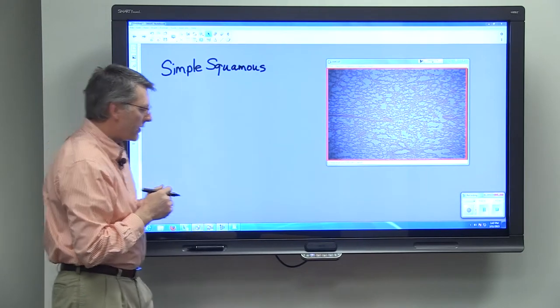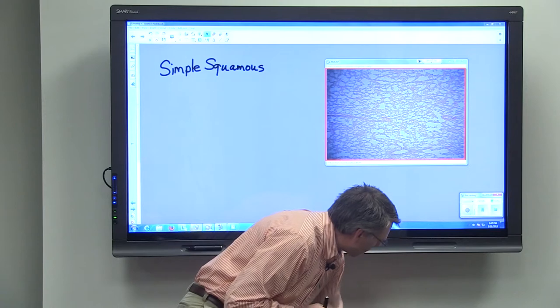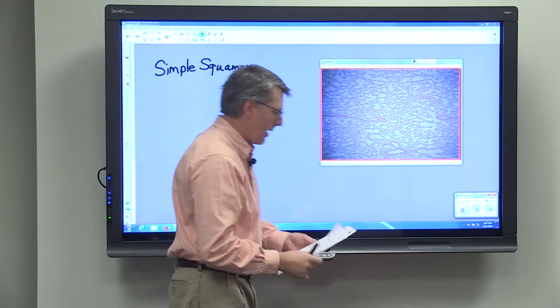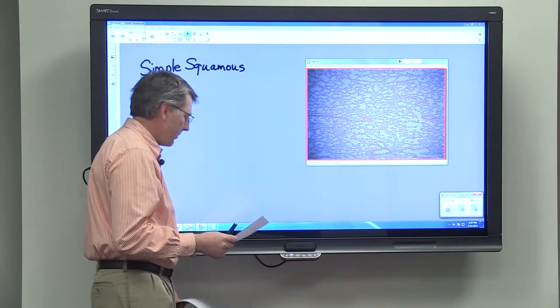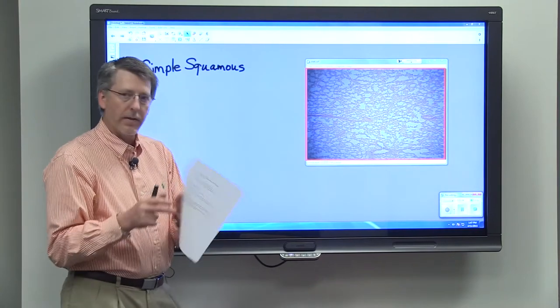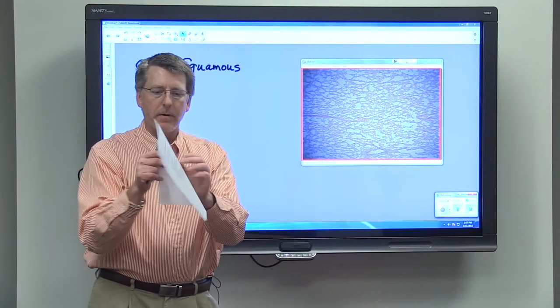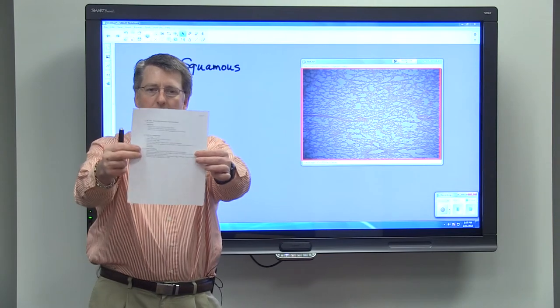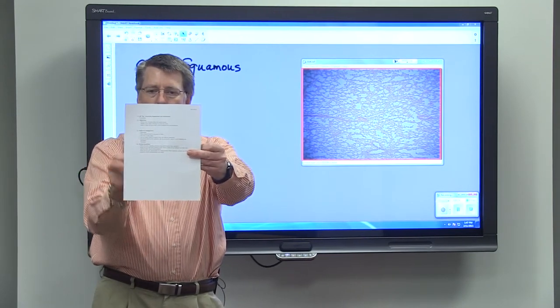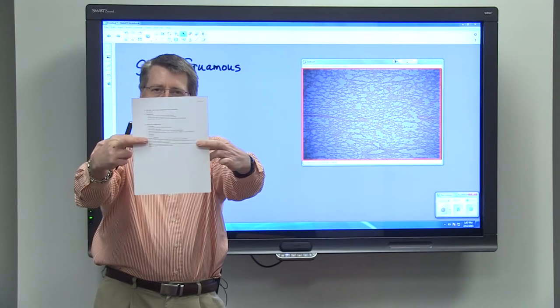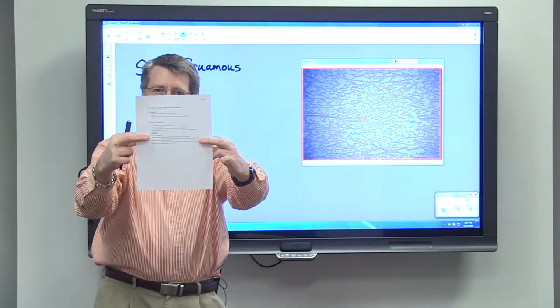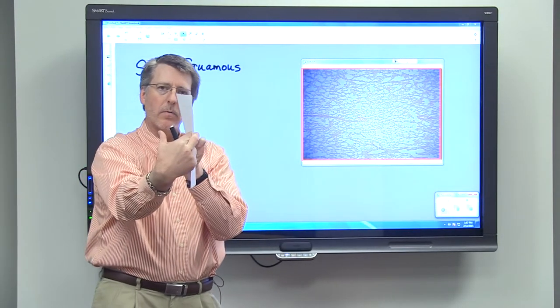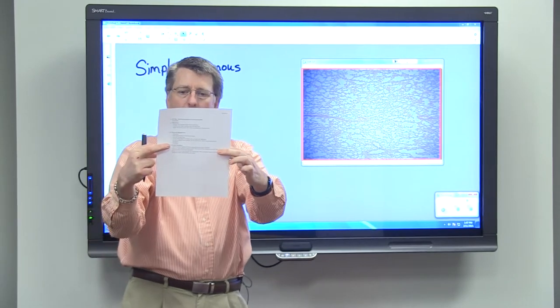To think about simple squamous epithelial tissue, I want you to think about a piece of paper to start with. If I have a piece of paper in front of me and in front of you, you can see as I hold it like this that it's a square piece of paper, but you really can't tell if you're looking at it straight on if I'm holding one piece of paper or one entire ream of paper.